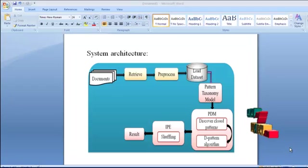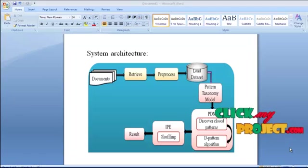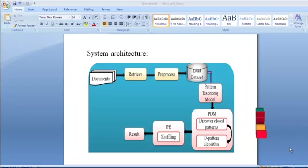Now I am going to explain system architecture of the paper. In this project, the input is documents. The user retrieves one document. The document is supplied to preprocess. Inside preprocess, there are two types of processes to be done. One is stop words, second is stemming. Stop words are words which are filtered out prior to or after processing of natural language data. Stemming is the process for reducing inflected words to the stem base. After completion of stemming, the document is loaded into the database. Next, this document is supplied to the pattern taxonomy model.